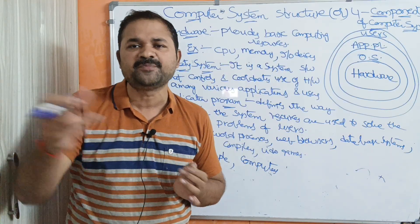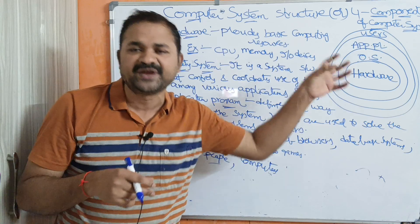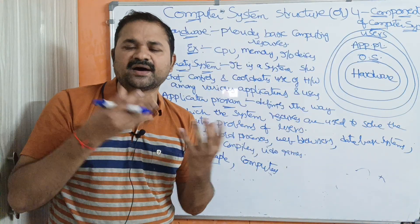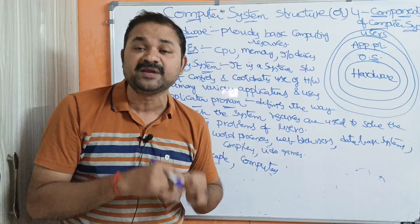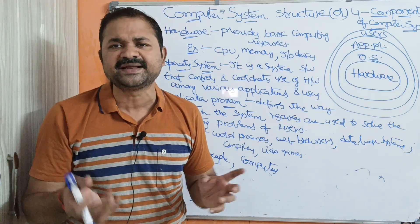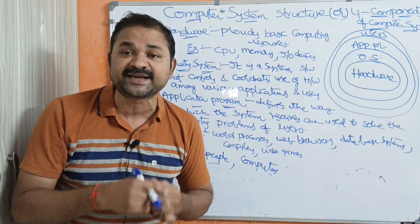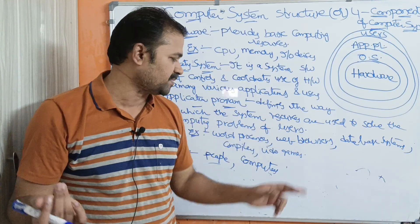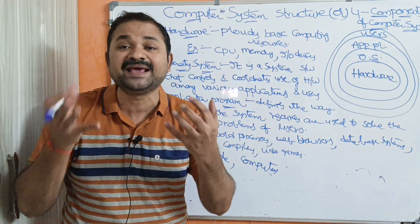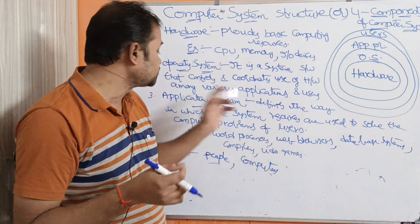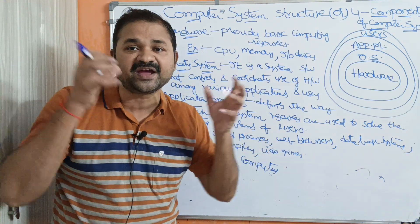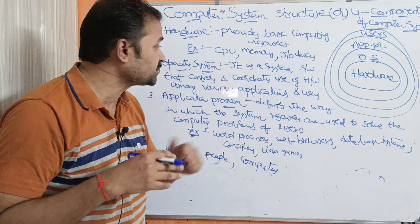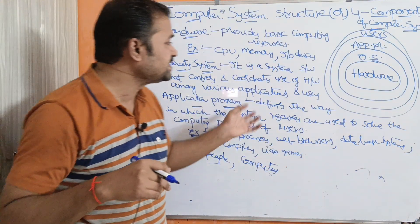Next, a database system is an application program — by using a database system we can create tables and perform several operations on them. A compiler is also an application program; it may be a C compiler or C++ compiler. The commonly used C compiler is Turbo C compiler, with which we can develop programs. Video games are also application programs, defined by the user.